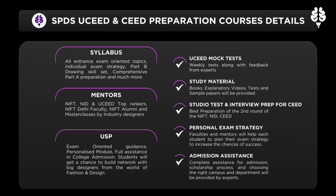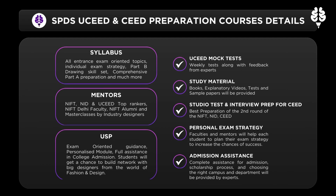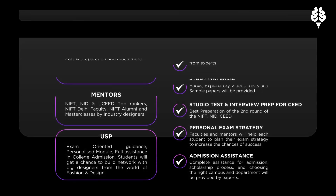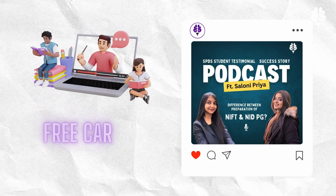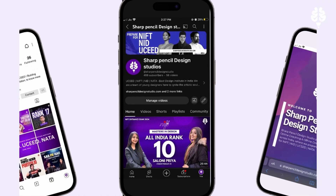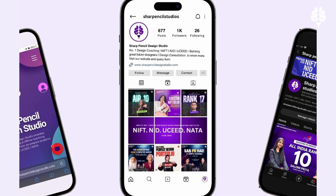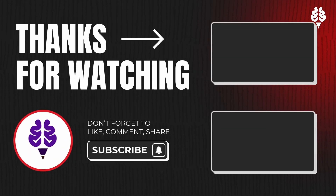So if you're aiming to prepare for the UCEED examination, we at Sharp Pencil Design Studio are providing up to 100% scholarship to prepare for your dream design college. Just follow two easy steps: head to the description of this video, contact us, and take a free career counselling session with our expert designers. If you found this information helpful, don't forget to give us a thumbs up and hit the subscribe button for more updates on the exams, tips and tricks. See you next time!